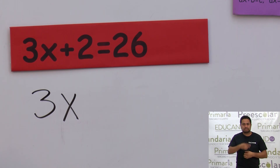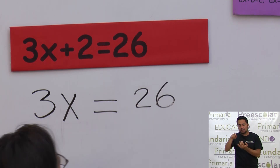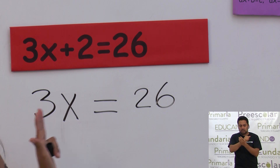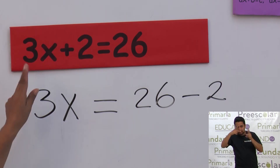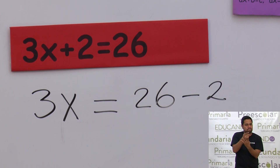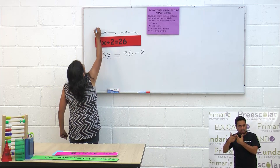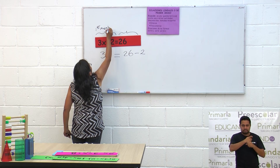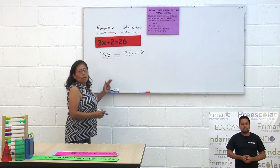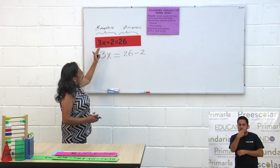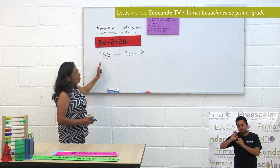Vamos a primero dejar en el primer término 3X. El número 2 está en el primer miembro; lo vamos a pasar al segundo miembro con signo contrario, con su inversa, y quedaría como menos 2. Los elementos que están antes del signo igual son el primer miembro y después del signo igual, el segundo miembro. Vamos a seguir resolviendo: 3X igual a 26 menos 2.